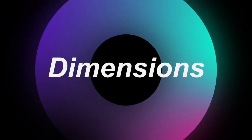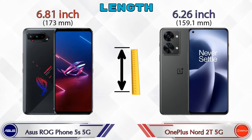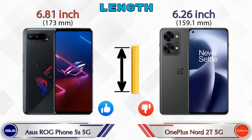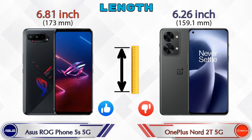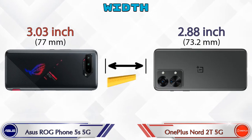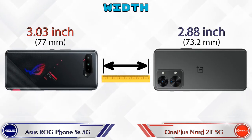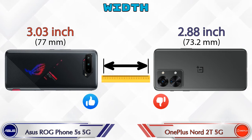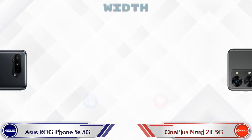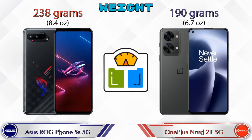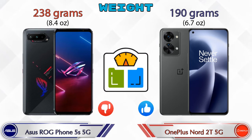Now let's check the dimensions. The length of the ROG Phone 5S 5G is 6.81 inches, while the Nord 2T 5G is 6.26 inches — shorter than the ROG Phone 5S 5G. The width of the ROG Phone 5S 5G is 3.03 inches and the Nord 2T 5G is 2.88 inches, also narrower. For weight, the ROG Phone 5S 5G is 238 grams and the Nord 2T 5G is 190 grams.